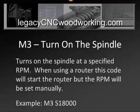Now if you have a router on your machine, not a spindle, when it sees this line of code the M3 will still turn your router on, but of course it won't change the speed of your router. You would have to set that manually.